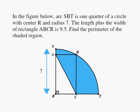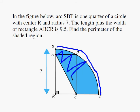In the figure below, arc SBT is a quarter circle with center R and radius 7. The length plus the width of rectangle ABCR is 9.5. Find the perimeter of the shaded region. So we are finding the perimeter of this area or region.